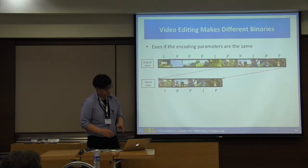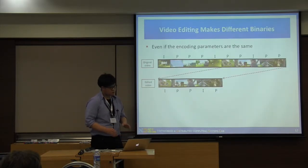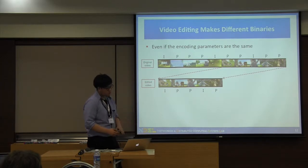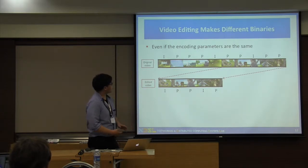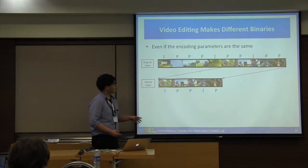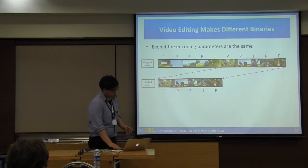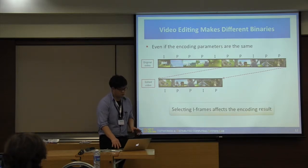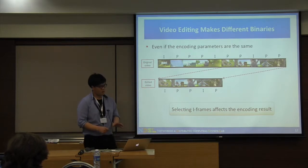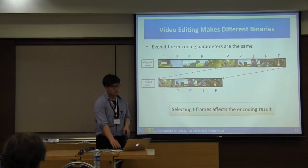Second, partial video editing sometimes produces a completely different binary from the same input, even if we use the same encoding parameters. For example, if we want to cut the front part of a video, the frame structure will be totally different, and then the two videos will have a totally different encoding result. That is why NRE is ineffective even when two videos have partially overlapping content. Therefore, preserving the I-frame positions and frame timing will be important to preserve redundant binaries.